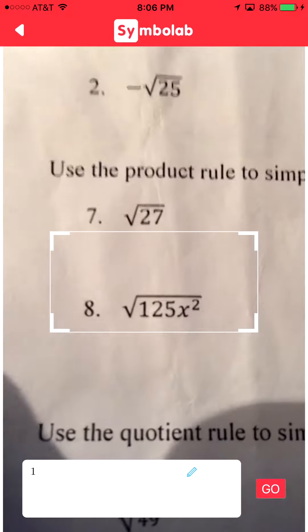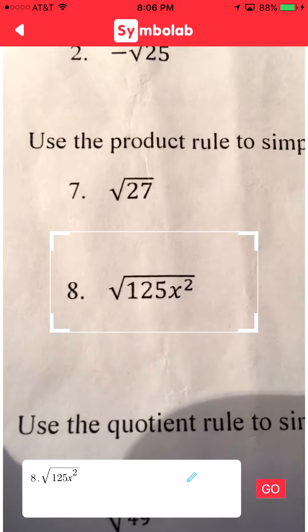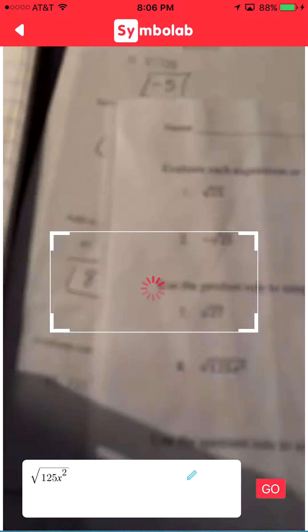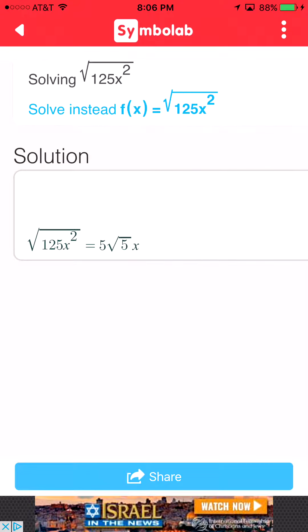Simple, right? This is great for when you have more complicated stuff. You can also zoom in. It takes a while. Zoom in. You match it. Hit go. Close your ad. It'll process. Boom. There's your answer. 5 square root of 5x.